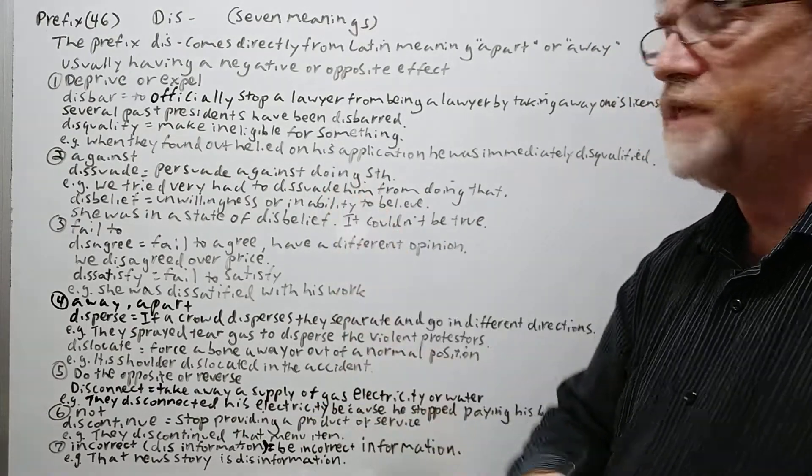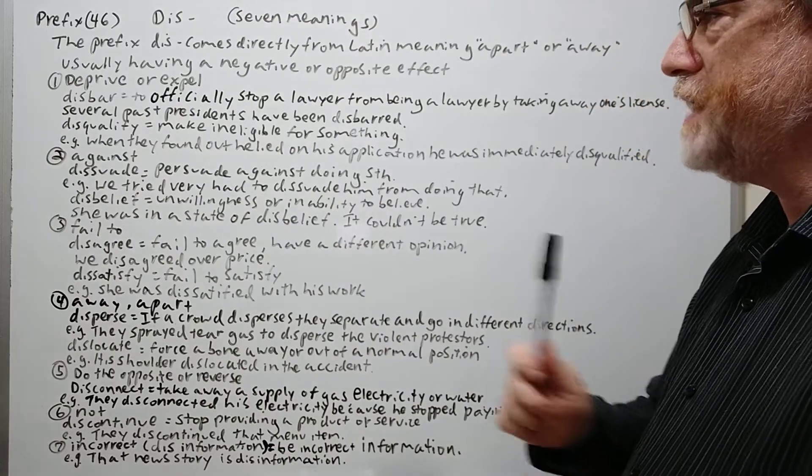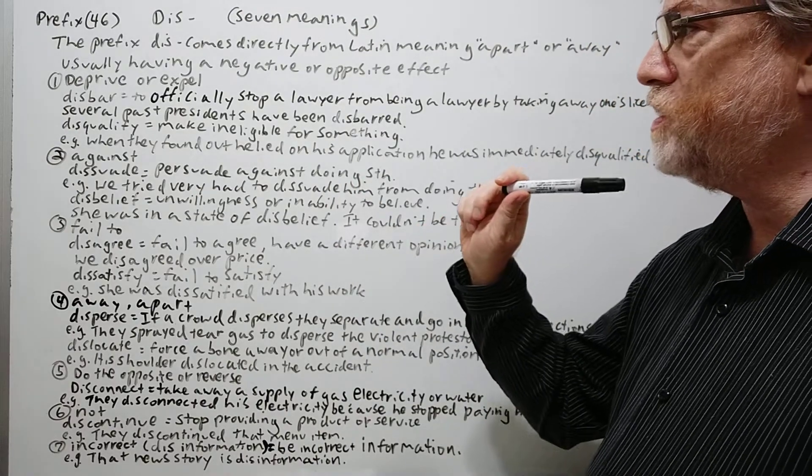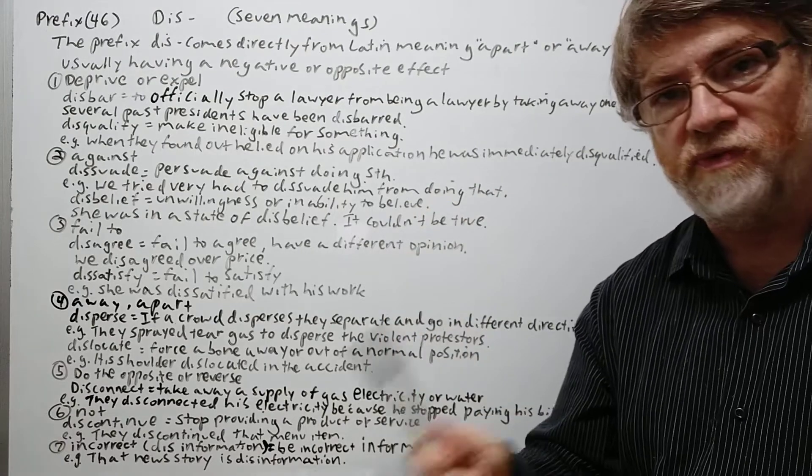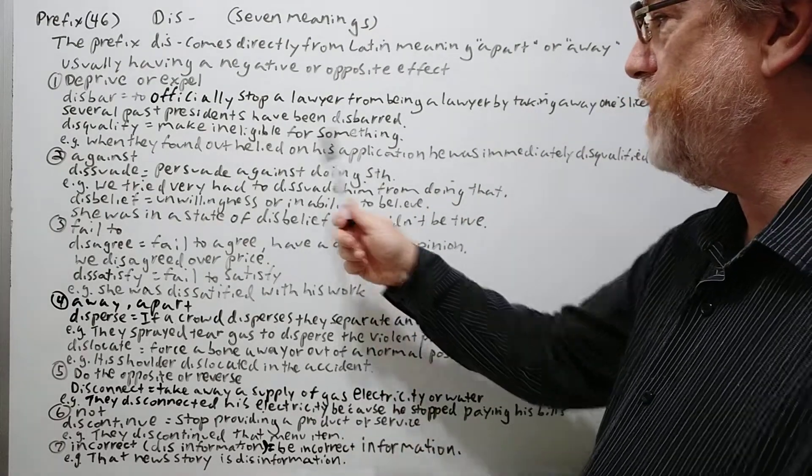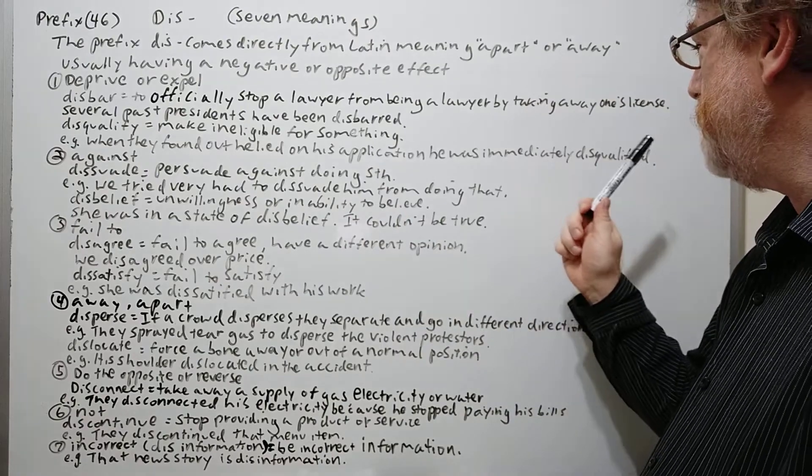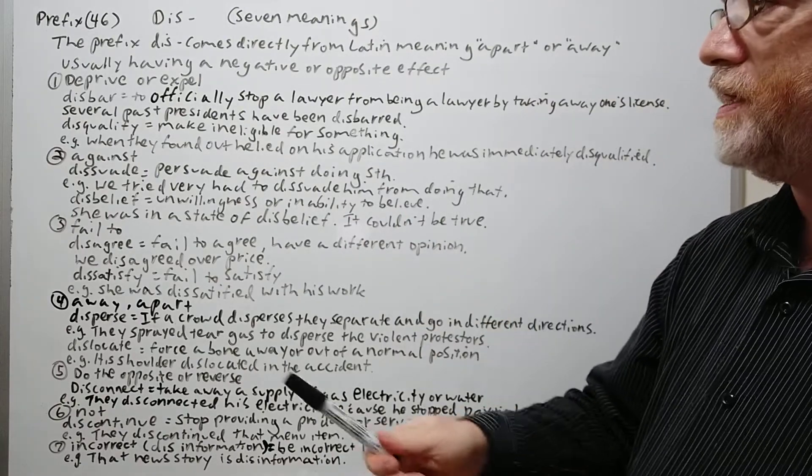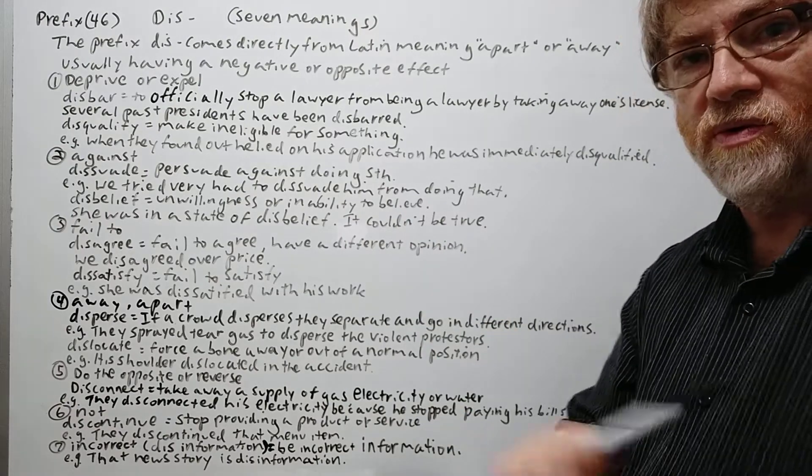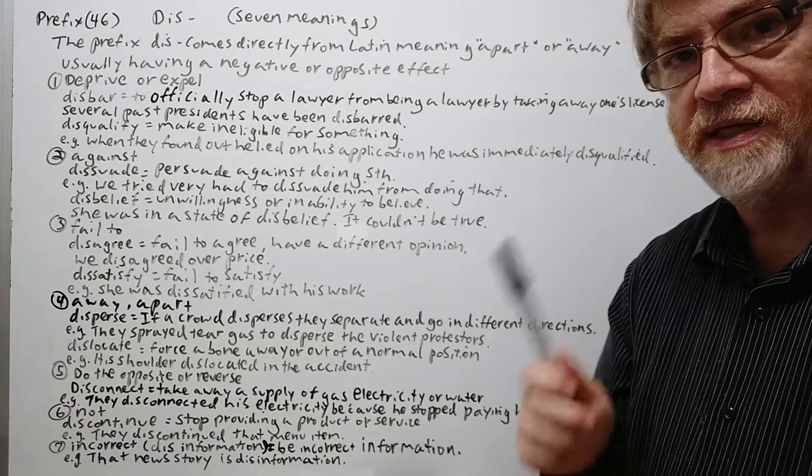Here's our example: several past presidents have been disbarred. Second example: disqualified, to make ineligible for something. When they found out he lied on his application, he was immediately disqualified. So again, he was kind of expelled or deprived from continuing in this activity.